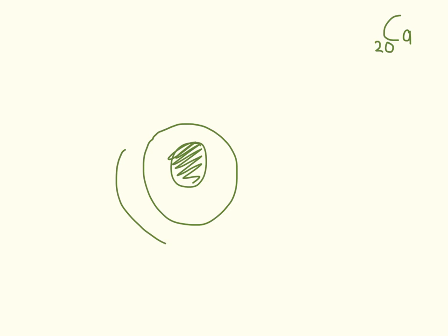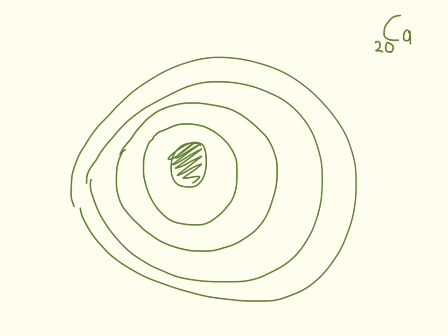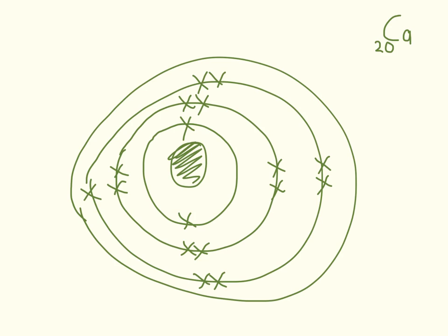Drawing the neat picture for calcium: that's my first shell, second shell, third shell, fourth shell. We count one through to twenty, placing two electrons on the first shell, eight on the second, eight on the third, and then nineteen and twenty go on the fourth outer shell for calcium.